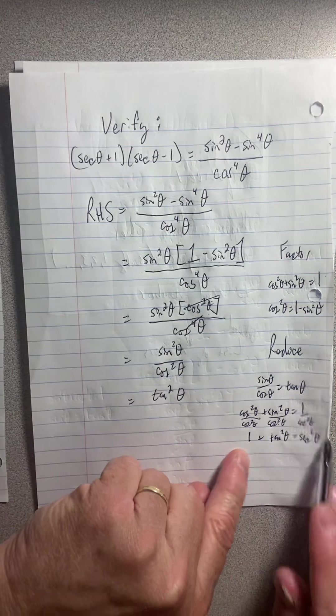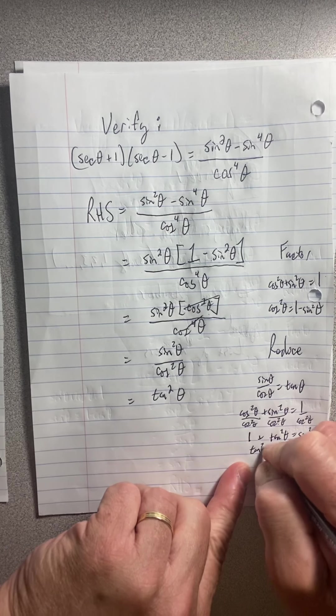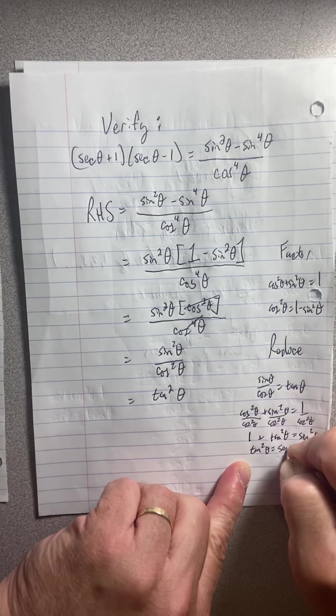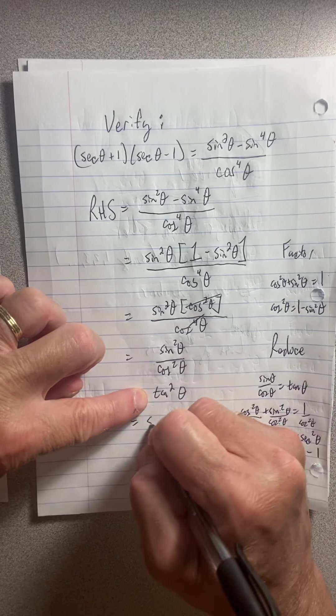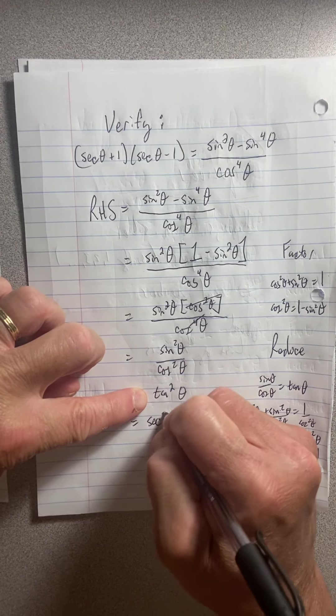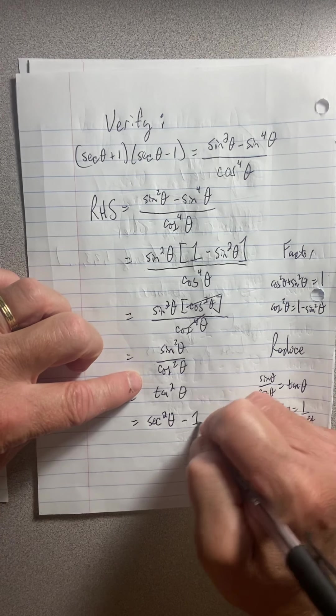So I'm going to subtract the one over there and I see that tangent squared theta is equal to secant squared theta take away one. So I can replace this with secant squared theta take away one.